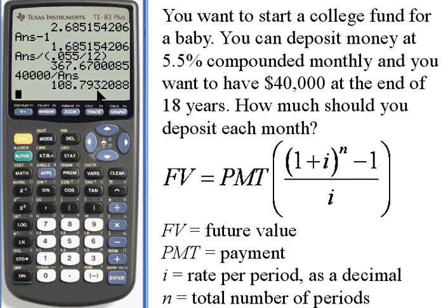What this means is: if you wanted to end up with $40,000 after 18 years, and you could deposit money at 5.5% compounded monthly, you could reach that $40,000 by depositing $108.79 into the account every month. I hope that helps — take care, I'll see you next time.